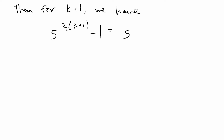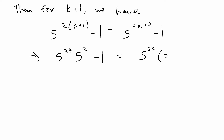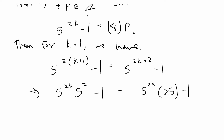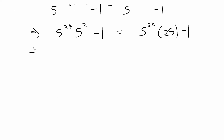First we distribute the 2, so that's 5 to the 2k plus 2 minus 1, which equals 5 to the 2k times 5 squared minus 1, which equals 5 to the 2k times 25 minus 1. Using our induction hypothesis, 5 to the 2k equals 8p plus 1, so we plug in 8p plus 1 for the 5 to the 2k, giving us (8p plus 1) times 25 minus 1.